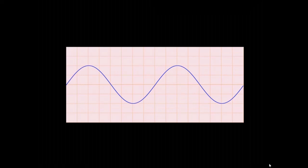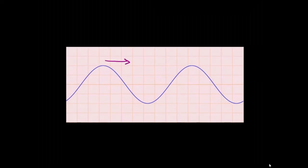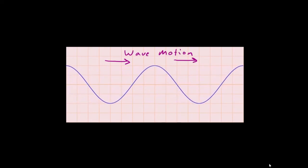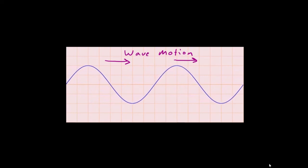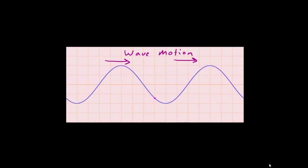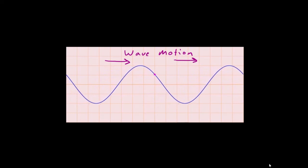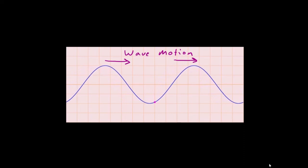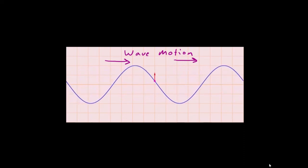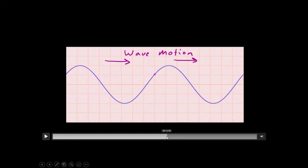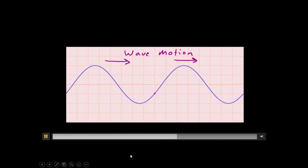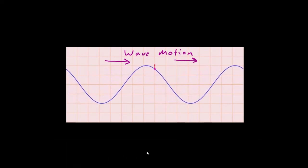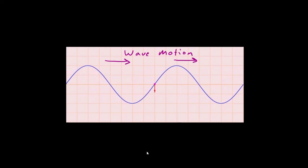Here we have a picture of the wave put in motion, moving along to the right. The medium is being disturbed as the energy travels. But if we look at just one particle in that medium — this pink dot right here — it's actually just going up and down while the wave is going side to side. This is what makes this a transverse wave: the particle moves perpendicular to the motion of the wave itself. It's not traveling along with the wave; the medium is simply disturbed by it.